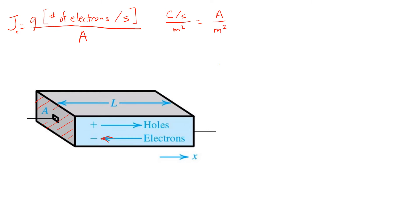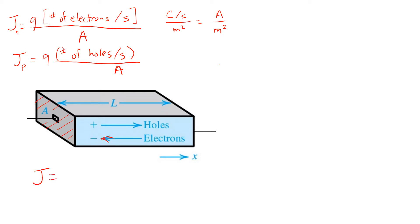If at the same time we've got a net movement of holes across that same surface from left to right, that would give rise to an additional current density JP equal to Q times the number of holes flowing across that area per second divided by the cross-sectional area A. And if the movement of the charge carriers is as indicated in the figure, both of those would add together to give a total current density J representing the total current density flowing from left to right.